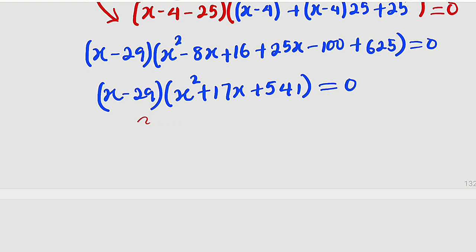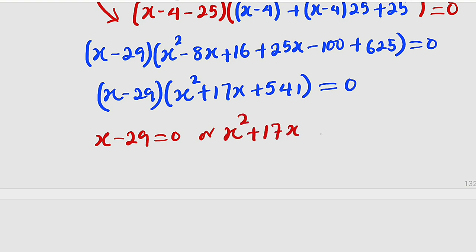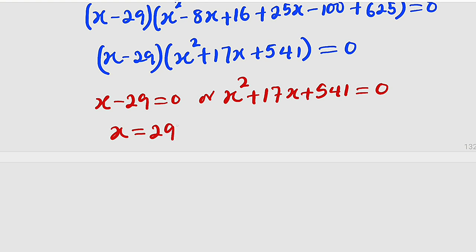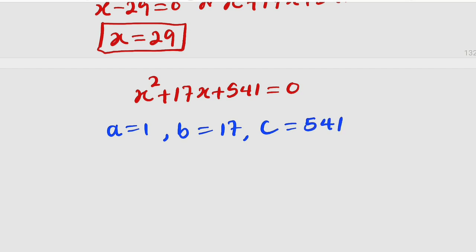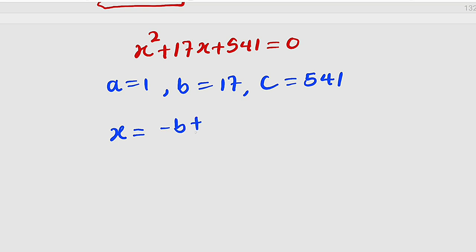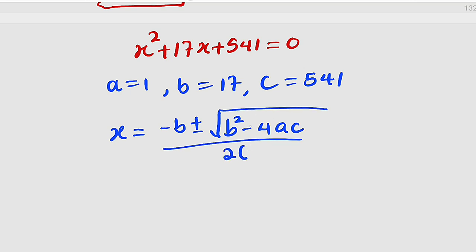You can see that we have two factors. We are going to set each equal to 0. So x minus 29 equals 0, or x squared plus 17x plus 541 equals 0. From the first factor, x is equal to 29 once you take negative 29 to the other side. So this is our first solution. The other solutions will come from this quadratic equation — we expect two other solutions making three solutions in total. So the quadratic equation has leading coefficient a equals 1, coefficient of x as b equals 17, and constant c equals 541.